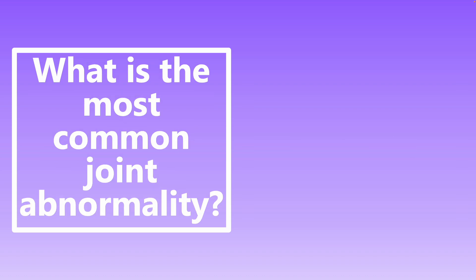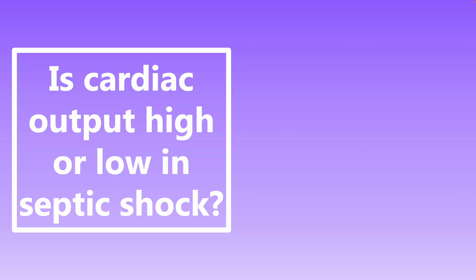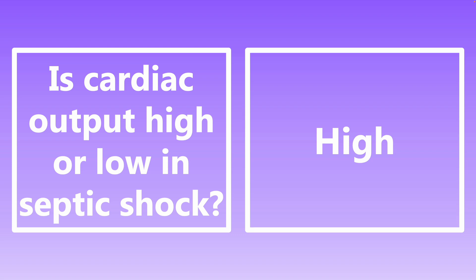What is the most common joint abnormality? Osteoarthritis. Is cardiac output high or low in septic shock? Cardiac output tends to be high, typically due to elevated heart rate. Cardiac output is heart rate times stroke volume — patients in septic shock have tachycardia fighting infection, increasing heart rate and resulting in increased cardiac output.